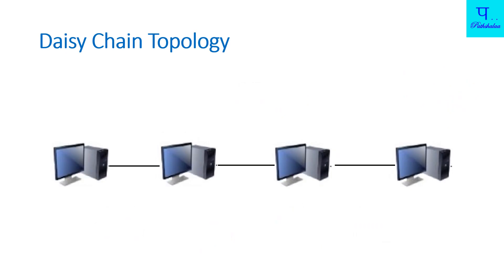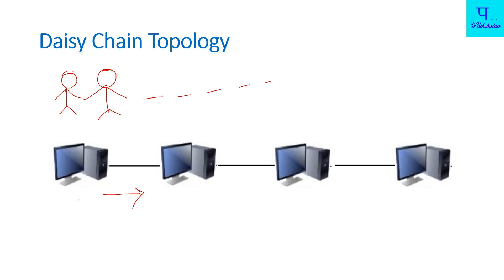Now we will see Daisy Chain Topology. You know there are many human chain campaigns. We can make the same type of chain with devices. This is our first device — it is connected via cable to the second device, the second device is connected via cable to the third device, and the third device is connected via cable to the next. They are creating a chain, so it is called Daisy Chain Topology.